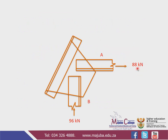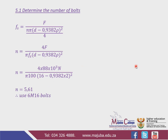Now we go to the solution. We are going to determine the number of bolts. The formula is: F equals n times pi times (d minus 0.9382 times pitch) squared, all over 4. This portion — pi times (d minus 0.9382 times pitch) squared over 4 — represents the area of the bolt. Take note of that.